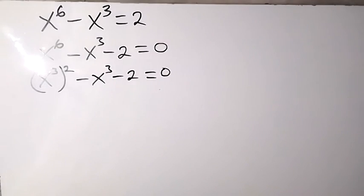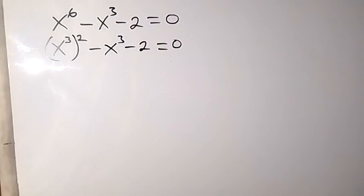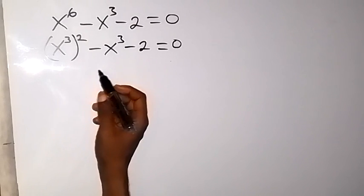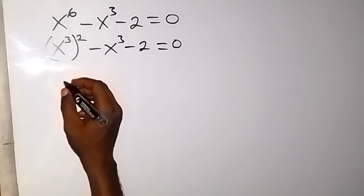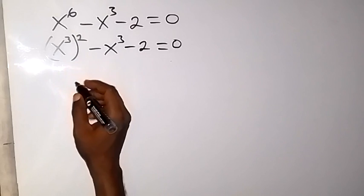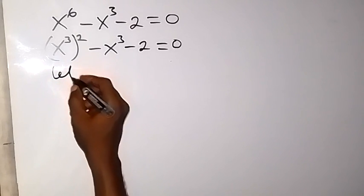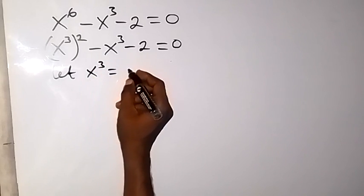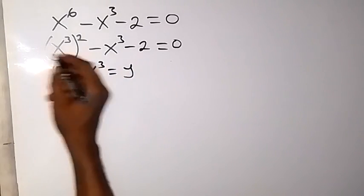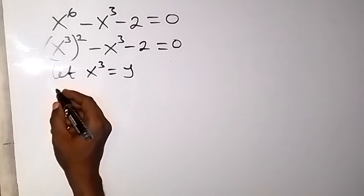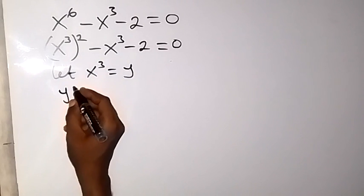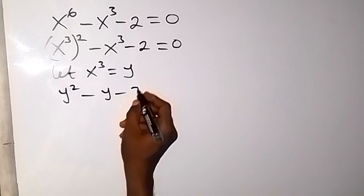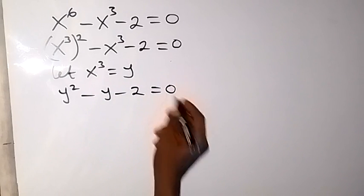From here, we have x raised to power 3 appearing twice. We can use a letter to represent that. So let x raised to power 3 equal y. We can rewrite this and we have y squared minus y minus 2, equals to 0.